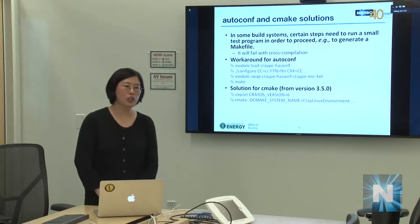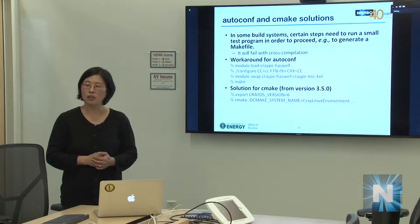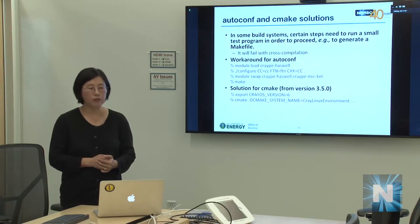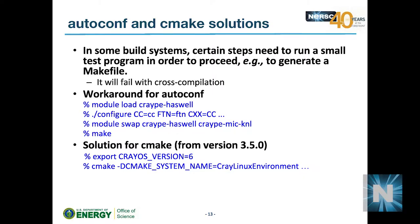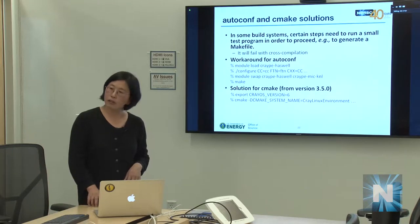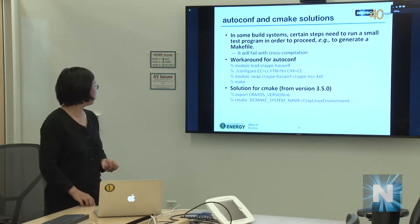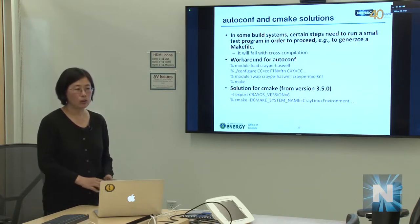One cross-compilation issue: some build systems run small test programs during configuration (e.g., autoconf), which will fail because the KNL binary cannot run on Haswell. The workaround for autoconf is to run the configuration step under the Haswell environment, then swap to CrayPE-MIC-KNL for the make step. For CMake version 3.5.0+, set 'export CRAYOS_VERSION=6' and define '-DCMAKE_SYSTEM_NAME=CrayLinuxEnvironment'.